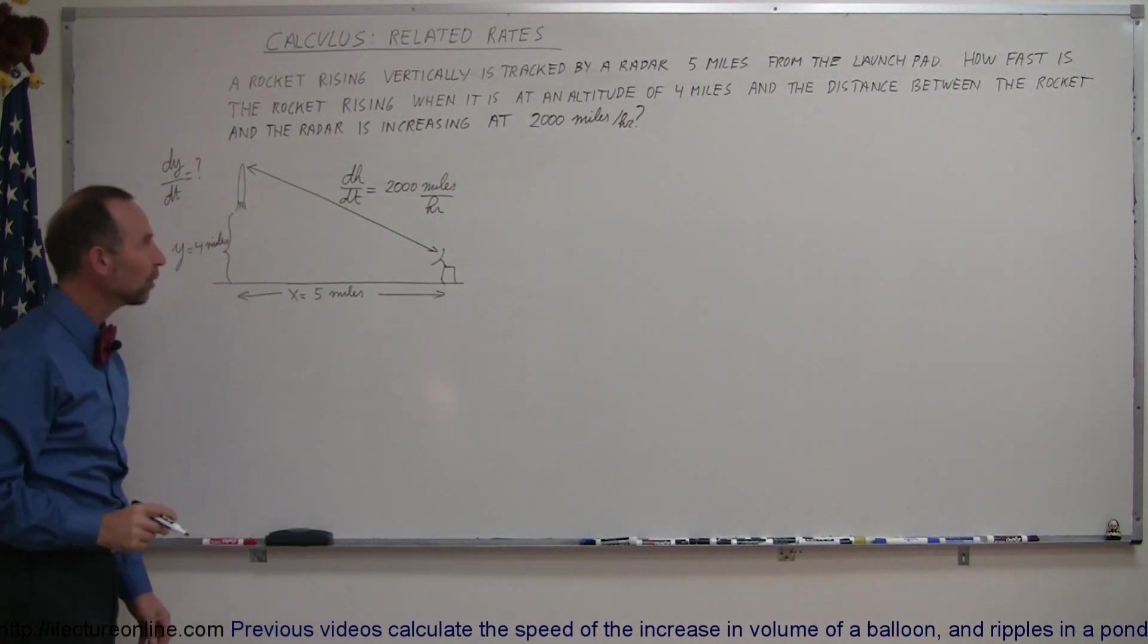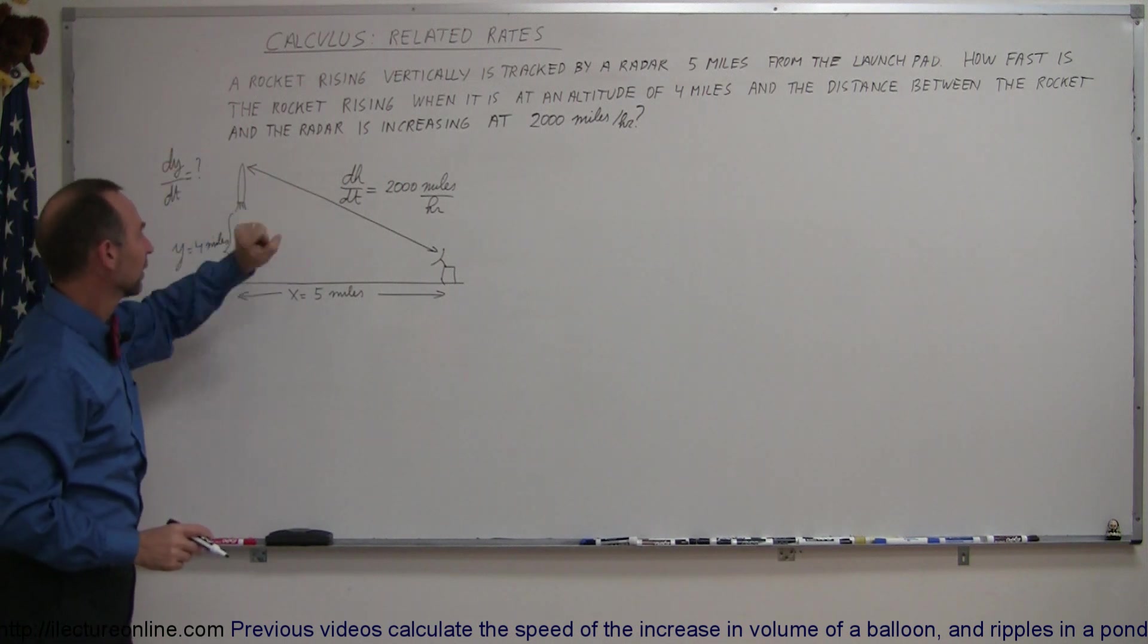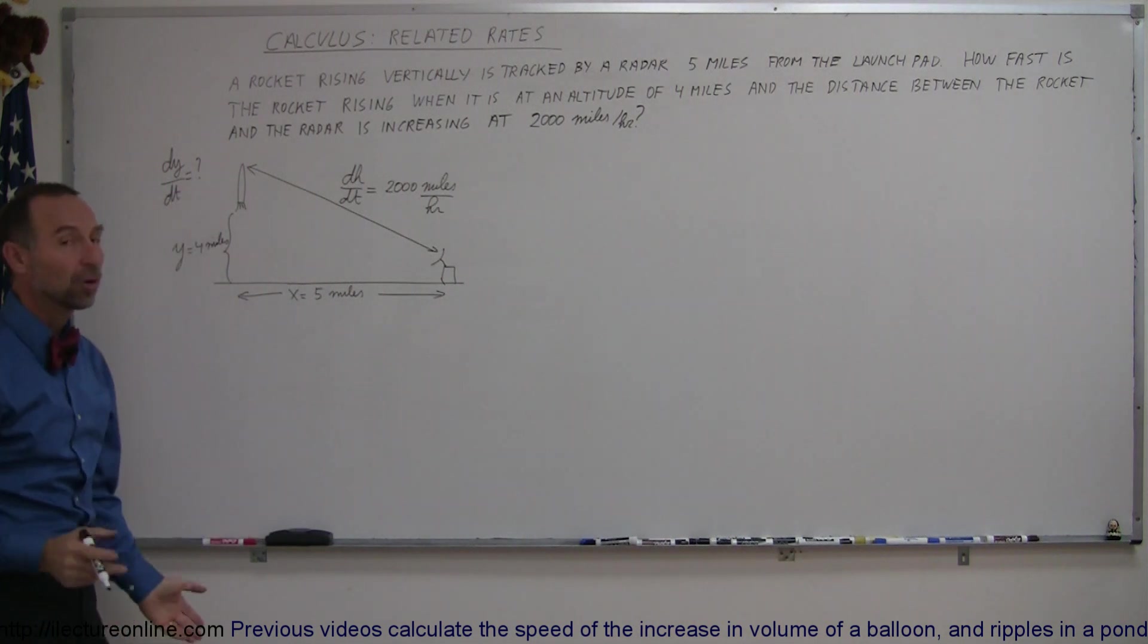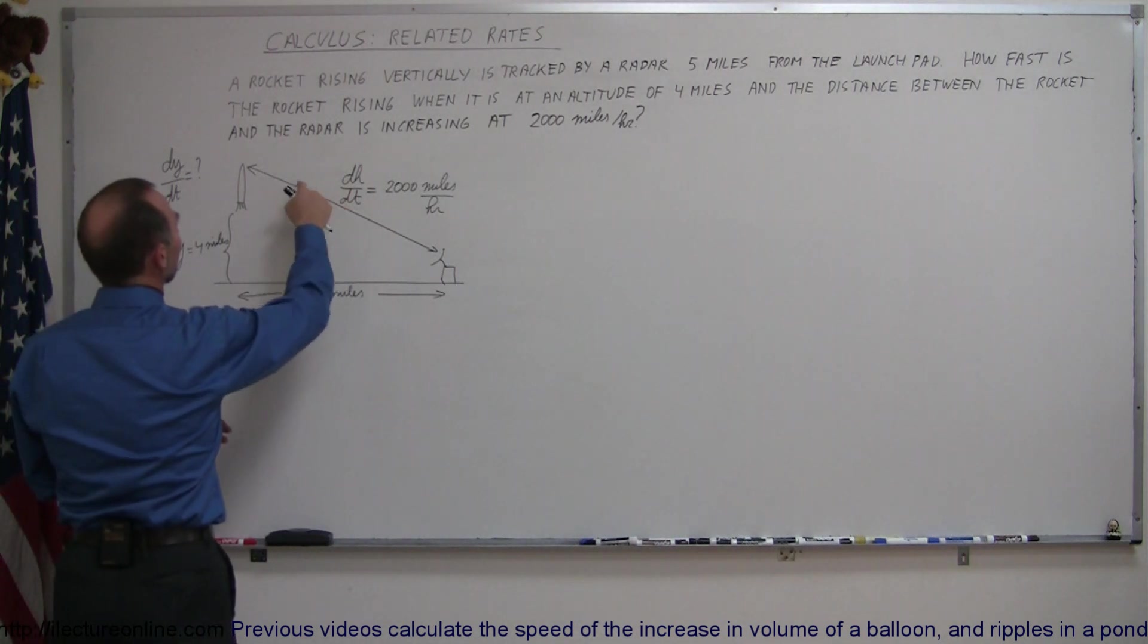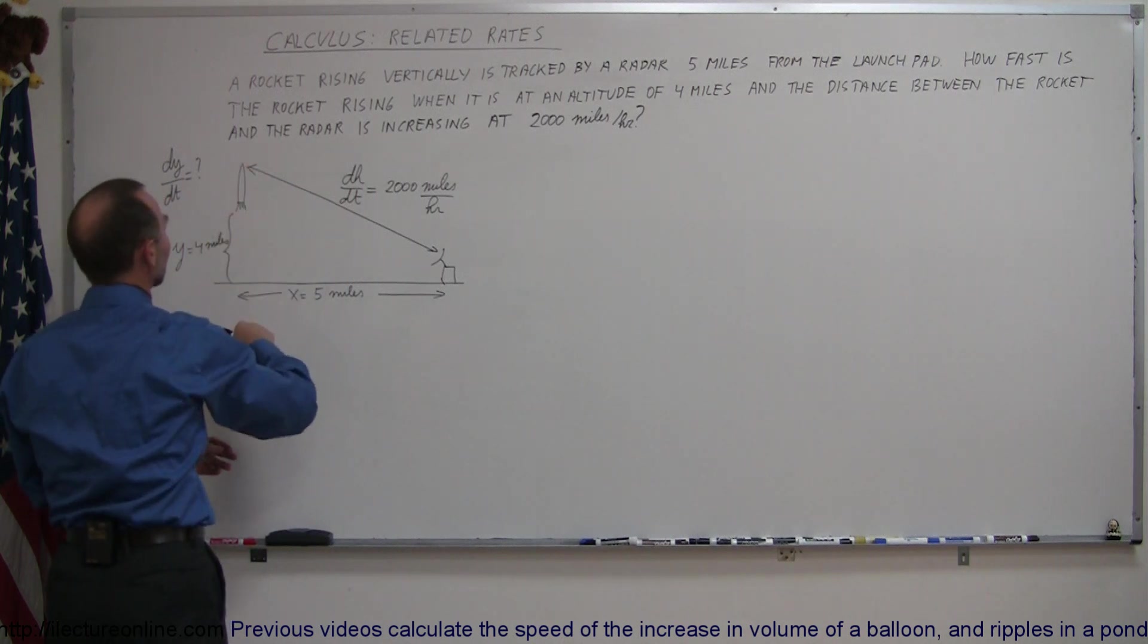Okay, so that's a given. They want to know this. This is given. They know that this is five miles away and the rocket is four miles up. So, where do we start? We need an equation that relates the hypotenuse distance to the height distance or the y distance. So we have ourselves a triangle right here.